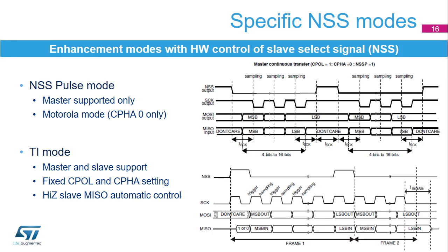NSS goes high between data frames for one SCK period for continuous transactions, and the clock polarity and phase are fixed. The CPOL setting is ignored and the CPHA has to be kept cleared. Another enhanced mode is the TI mode where the data flow is synchronized by the SS pulses provided by the master on the last bit of data. The clock polarity and phase configuration is fixed and the slave data output is automatically switched into high impedance when the bus traffic stops and on a specific configurable timeout. CPOL equals zero, CPHA equals one setting has to be kept if CRC is applied in TI mode. A CRC cannot be applied in NSS pulse mode.